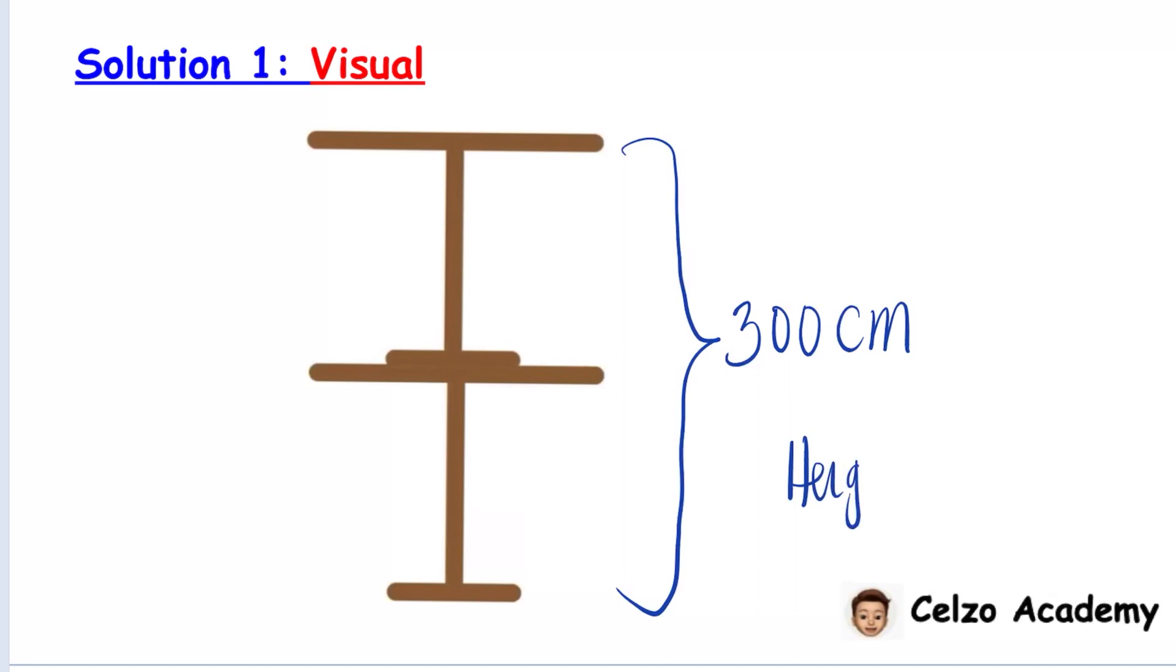This means that the height of each table is 150 centimeters, because we're splitting up 300 centimeters into two tables. So that is 300 divided by 2.